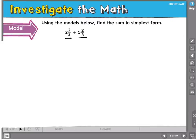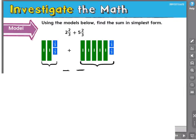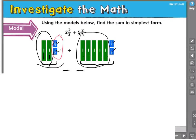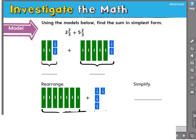We're going to use fraction models to help us. I've got some models here. Here is the way I would represent 2 and 2 thirds, and here's how I would represent 5 and 2 thirds — 5 wholes and 2 thirds. When I add them together, I'm going to start by grouping my whole numbers and grouping my fractional parts. When I rearrange them and put them together, it looks like this.